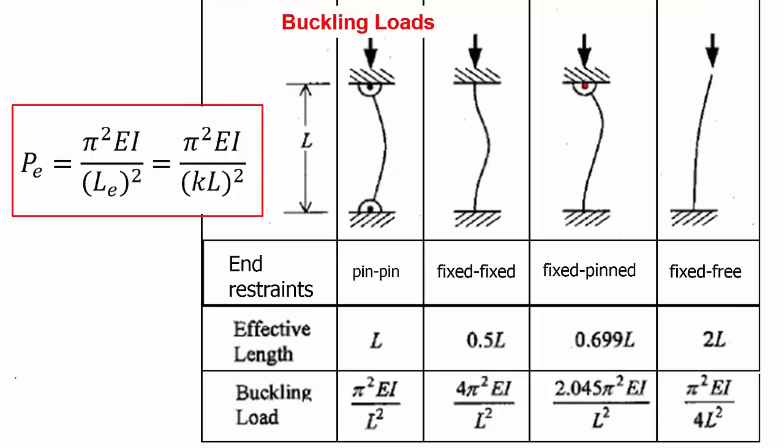Returning now to the buckle equation let's look at how significant these end restraints are. Here you can see four cases: pin-pin, fixed-fixed, fixed-pinned and fixed-free and the effective length shown here in the second row. Substituting these values into our formula now yields the following values. Taking our pin-pin case as being the datum giving it a value of 1.